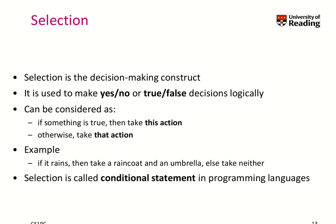Now let's talk about selection. It's a decision-making construct that allows you to make yes/no or true/false decisions logically. For example: if it rains, take a raincoat and an umbrella; else, take neither — or perhaps take a sun bath instead.